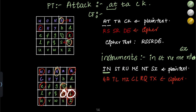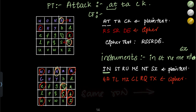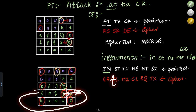For the pair S and T: S is here and T is here — they are in the same row. For same-row letters, take the letter to the right. For S the next letter is T, and for T wrapping around the row gives L. So ST encrypts to TL.